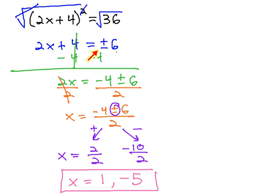Then, as we continued solving, we kept that plus or minus in there until the x was all alone, so that we could add the numerator and subtract the numerator to give us our two solutions, which simplified to 1 and negative 5.